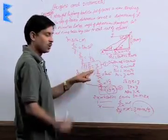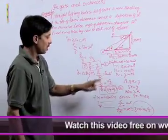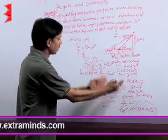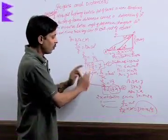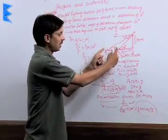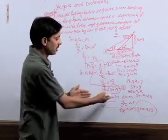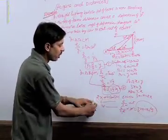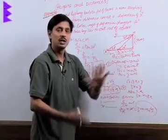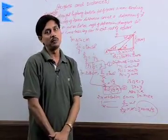In triangle ACM, H upon Y equals tan 30, giving root 3 H equals Y. In triangle BCM, H upon X equals tan 60, giving H equals root 3 X. Substituting the value of H from equation 2 into equation 1, we get Y equals 3X. AB equals Y minus X equals 2X. Using the unitary method, 2X meters covered in 6 minutes means X meters — that is BC — is covered in 3 minutes. So the car takes 3 minutes to travel from B to C.